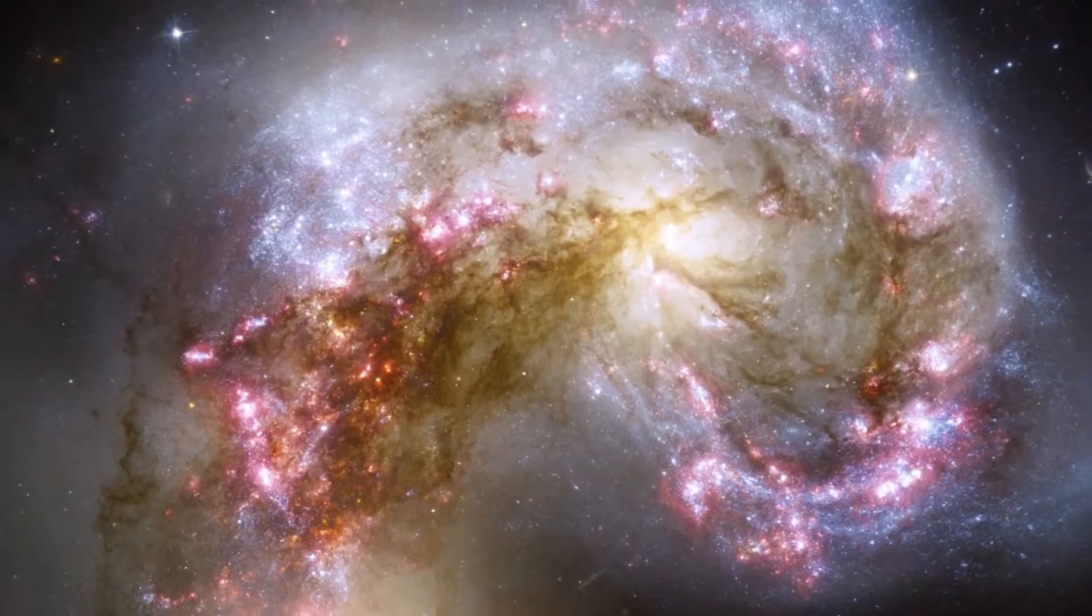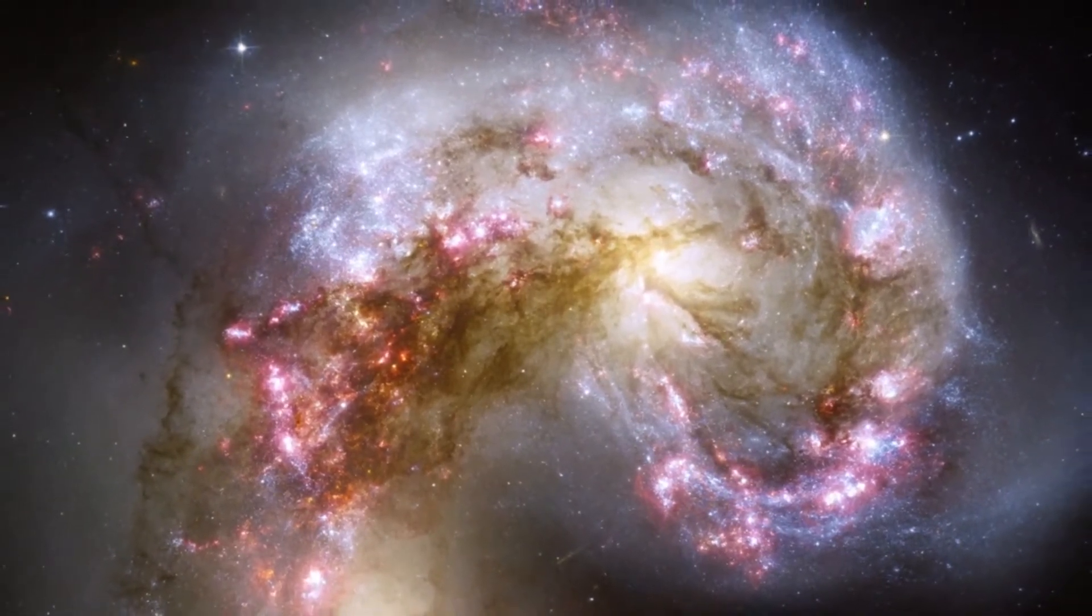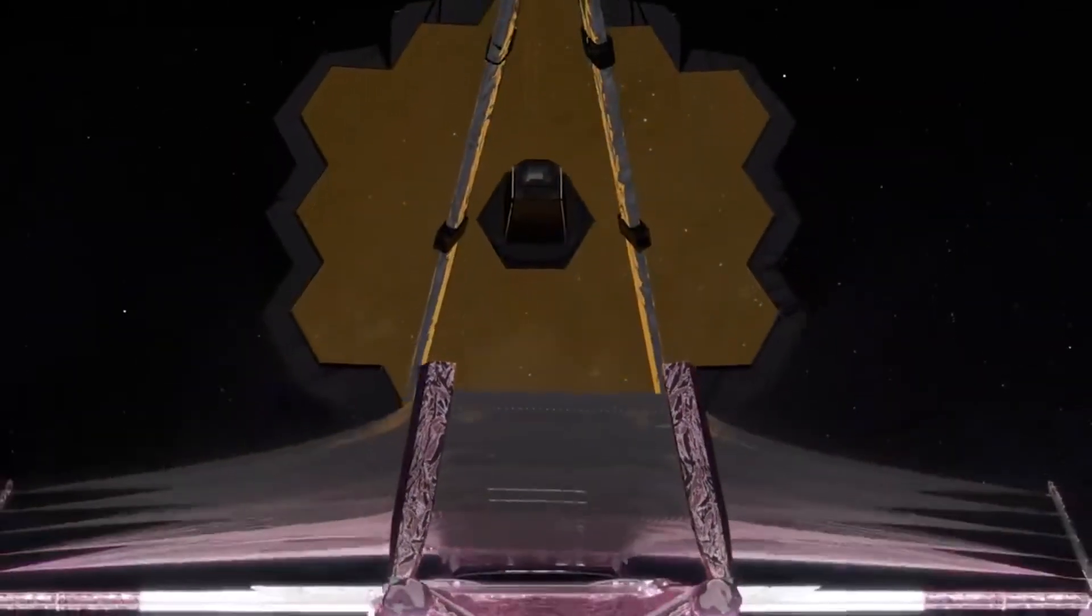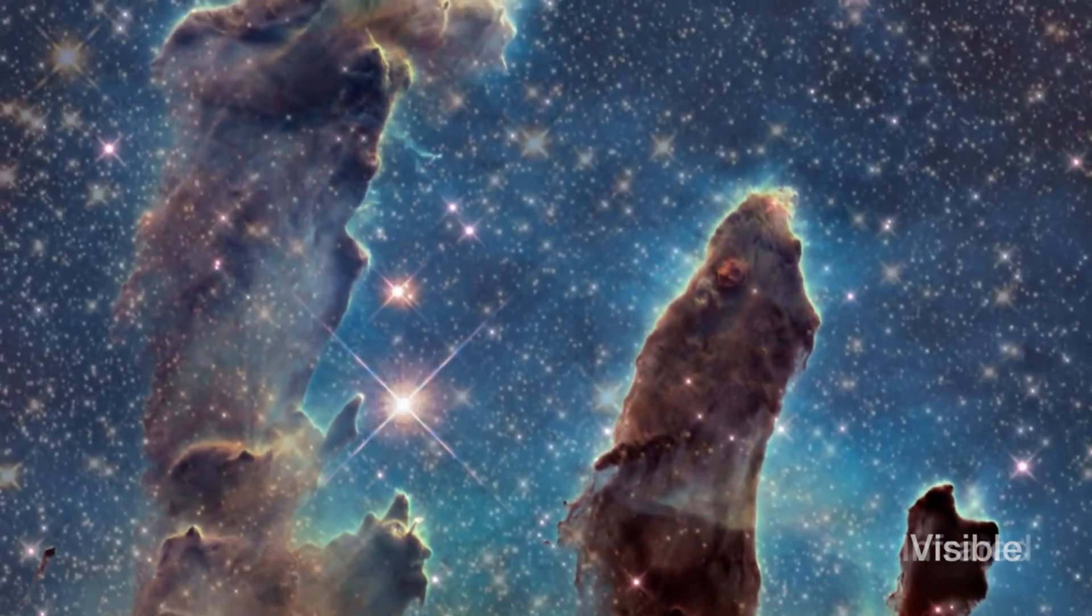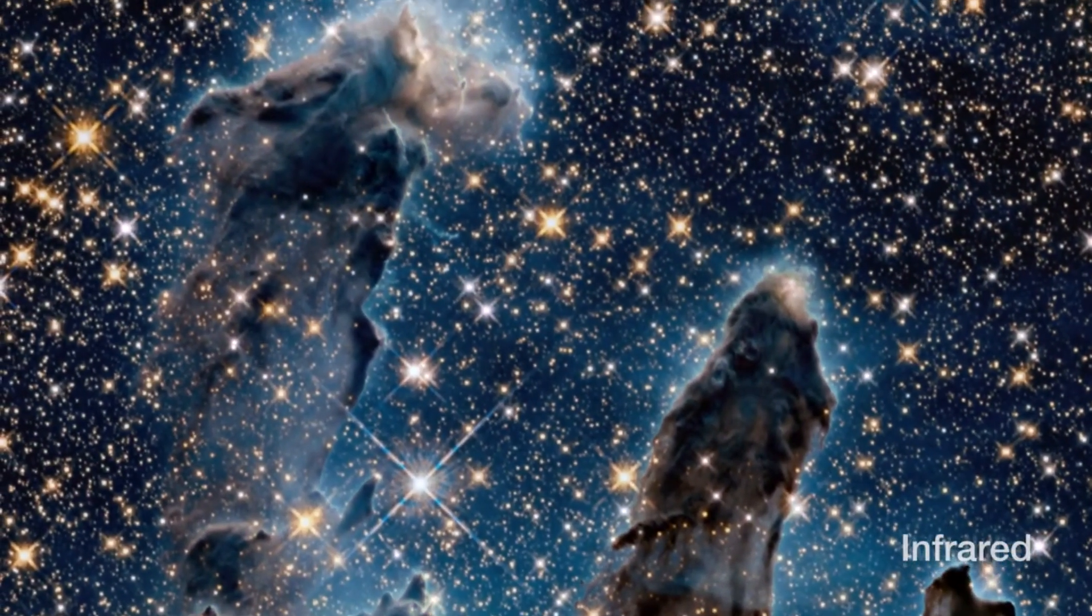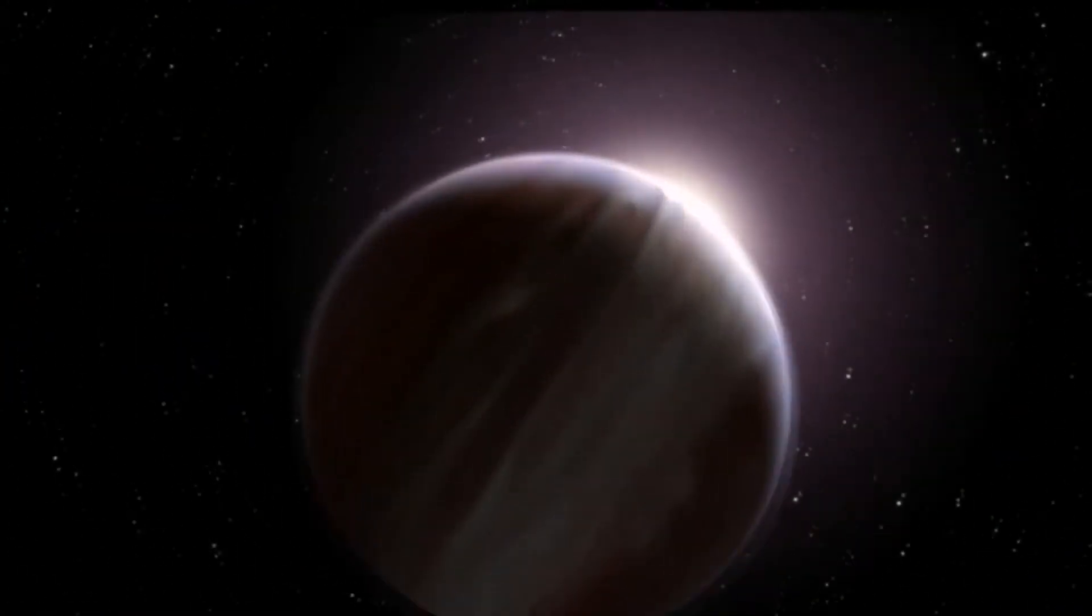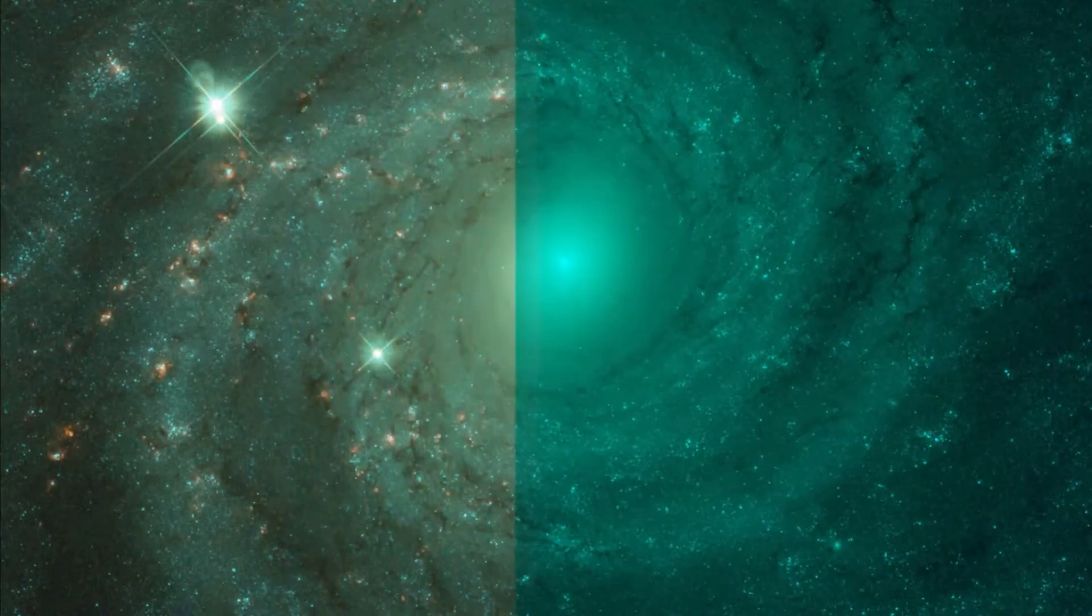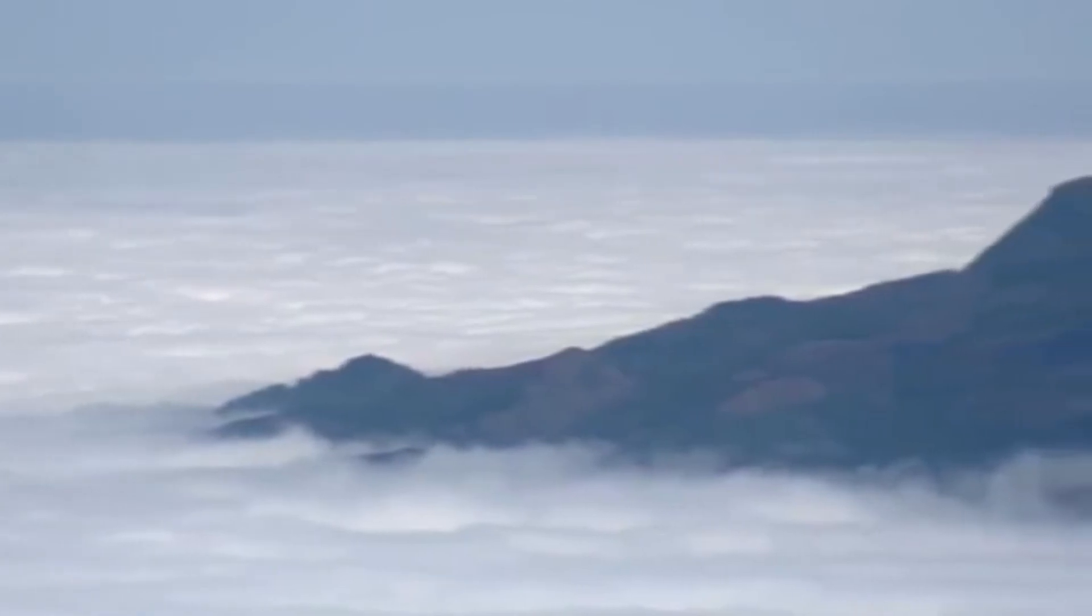The James Webb Space Telescope will solve puzzles in our solar system, look into distant worlds around other stars, and explore the mysterious structures and the origin of our universe and our place in it. Besides, due to its high sensitivity and infrared imaging capabilities, it will also search for potentially habitable exoplanets and try to characterize their atmospheres.